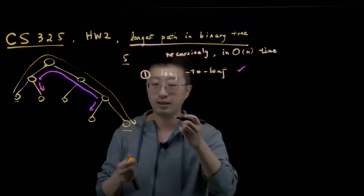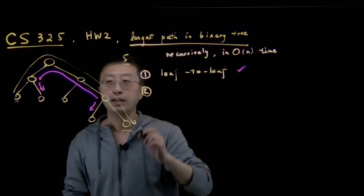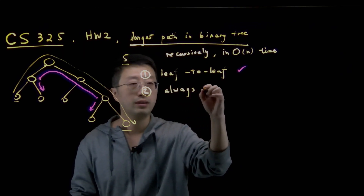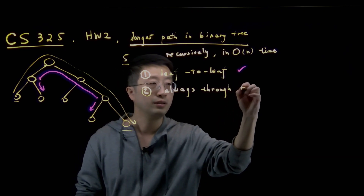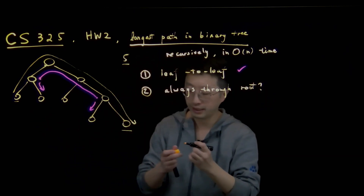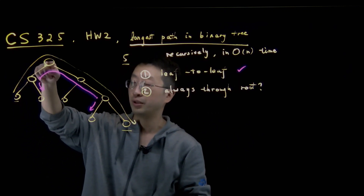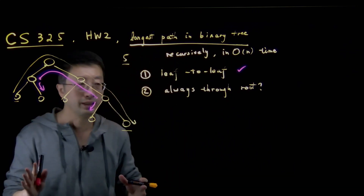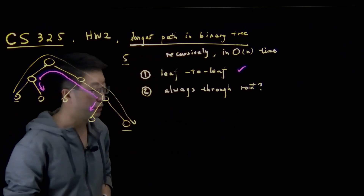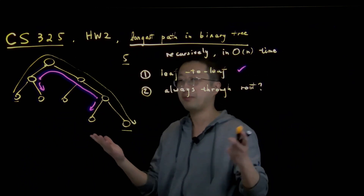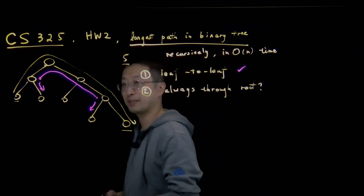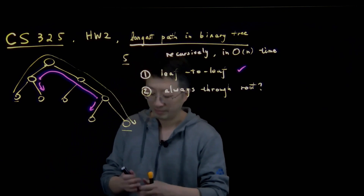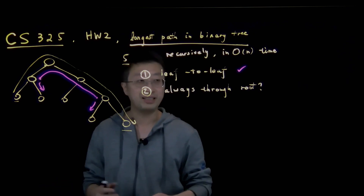The second observation that many students would have is: does the path have to go through the root? In this particular case, it is true that the longest path happens to go through the root node. But is it always guaranteed that if you're given an arbitrary binary tree, the longest path must go through the root? I'll give you a minute to think about it. The answer, believe it or not, is actually not true.